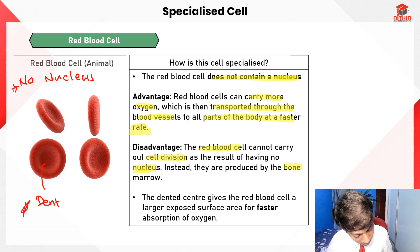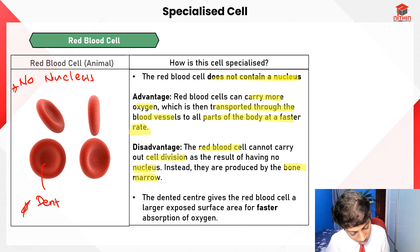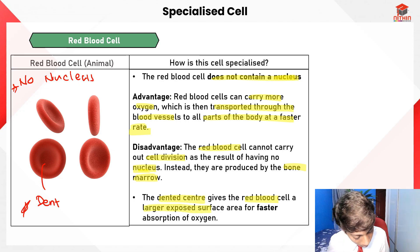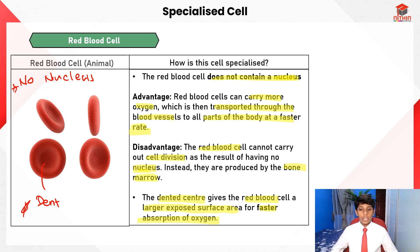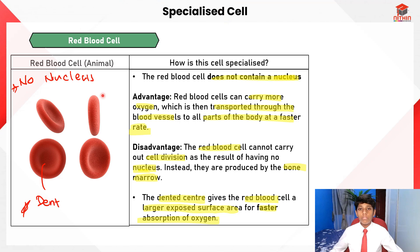Since red blood cells cannot divide, they are instead produced by the bone marrow. The dented center gives the red blood cell a larger exposed surface area for faster absorption of oxygen, allowing it to carry more oxygen efficiently. Those were the three specialized cells.